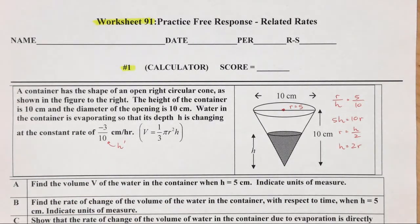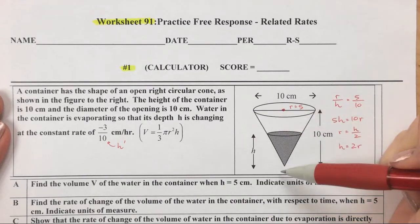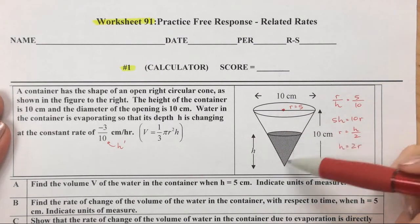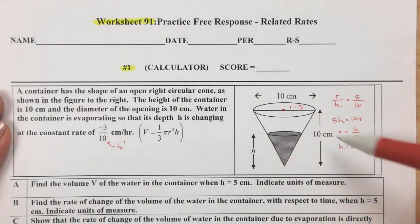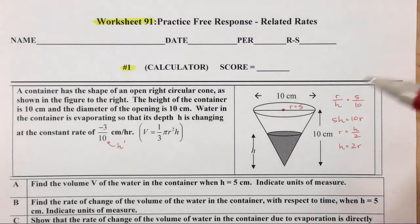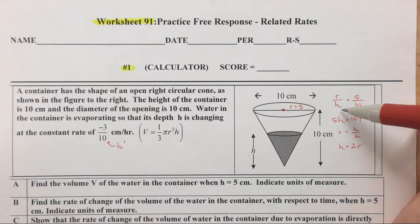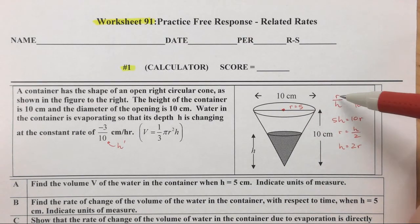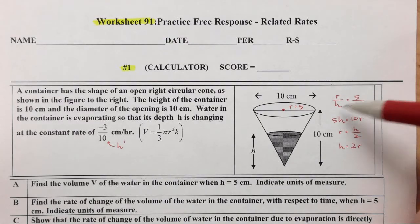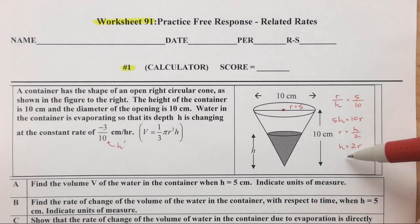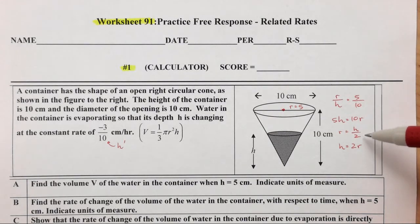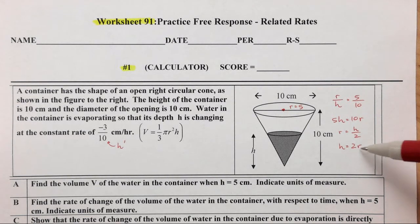In a cone, the water's radius and height are proportional to the container's radius and height. So r over h equals 5 over 10. Cross multiply: 5h equals 10r. You can solve for r or for h — I did both, and later I'll need to plug one in depending on what I need to find.